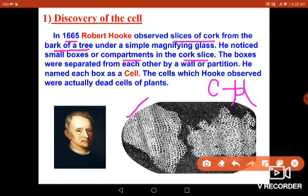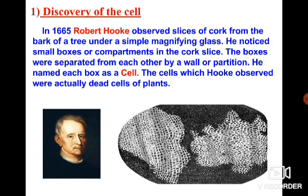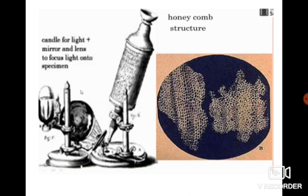He named these small compartments or boxes as 'cell.' The word cell is a Latin word which means small rooms or little rooms. Because they resembled a honeycomb-like structure and appeared like small boxes, he named them 'cell,' derived from the Latin language.